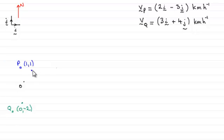And what I've done is I've just added on the initial position vectors of P and Q at 2 p.m. That's when the time t I've set is 0.